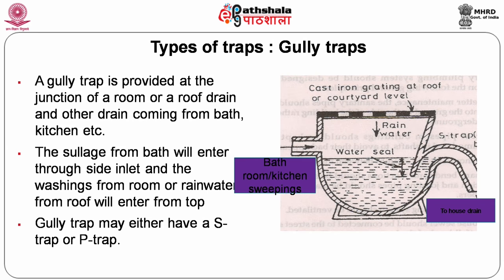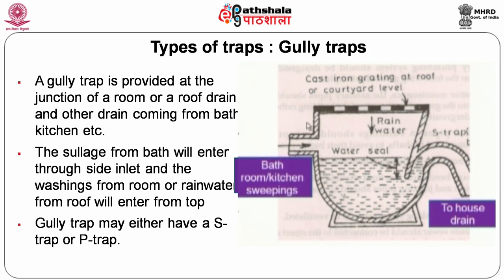The gully trap has an additional provision: apart from sullage water entering from the side — from bathroom and kitchen — rainwater and other floor water enters from the top. There are two entries to this trap, which is why it is called a gully trap. It is also connected to the house drain.